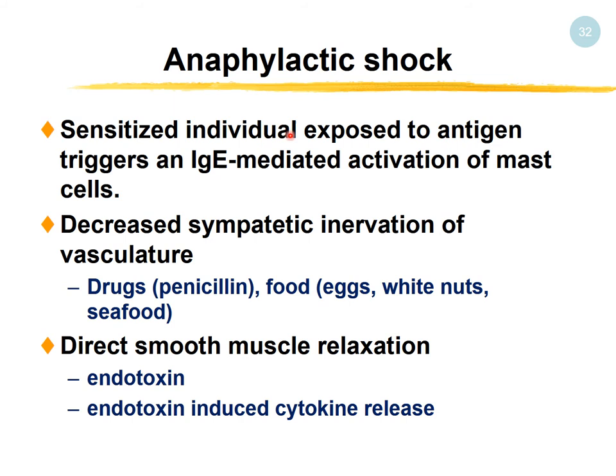Anaphylactic shock affects a sensitized individual exposed to an antigen triggering IgE-mediated activation of mast cells, causing vasodilation again. Decreased sympathetic innervation of the vasculature can be triggered by drugs, fruits, nuts, or seafood. Direct smooth muscle cell relaxation occurs due to endotoxin or endotoxin-induced cytokine release.